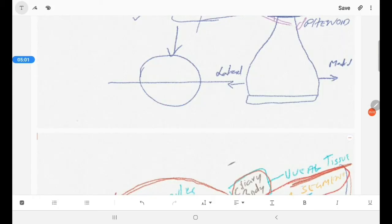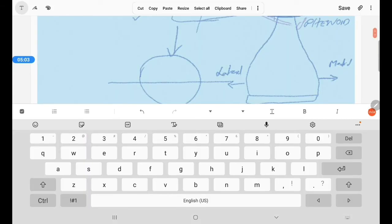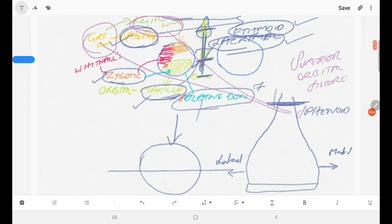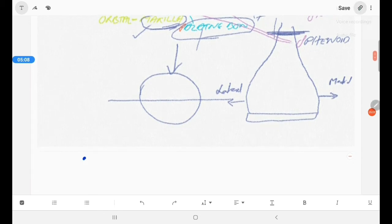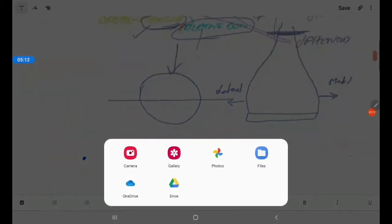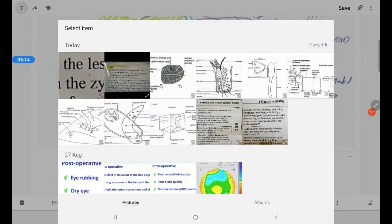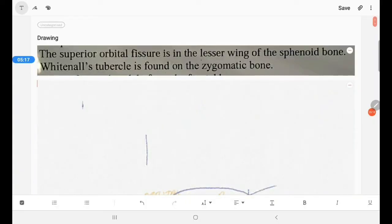Before I end this segment, I have a question to you guys from here. The superior orbital fissure is in the lesser wing of the sphenoid. Is it true or false? The Whitnall's tubercle is found on the zygomatic bone. True or false? When all of you answer this question, we will go into the next segment.